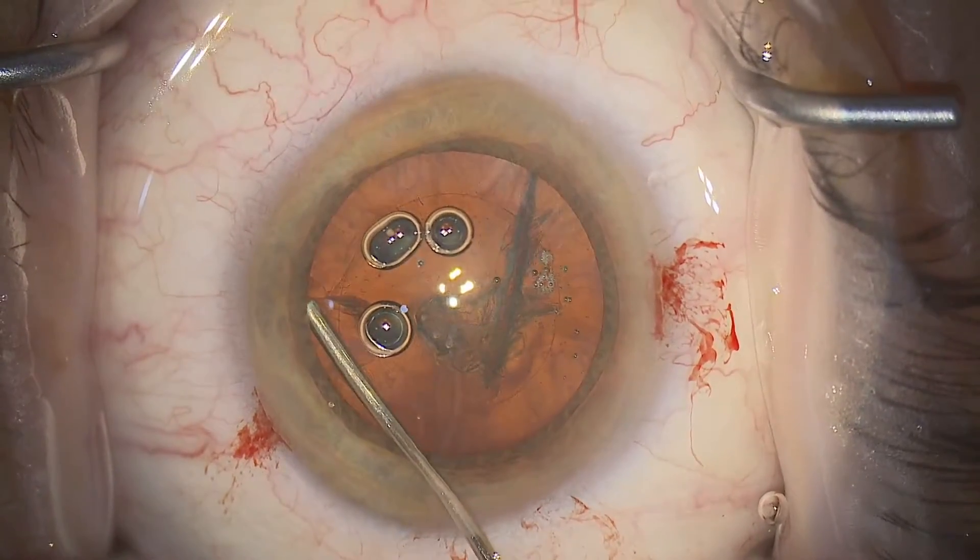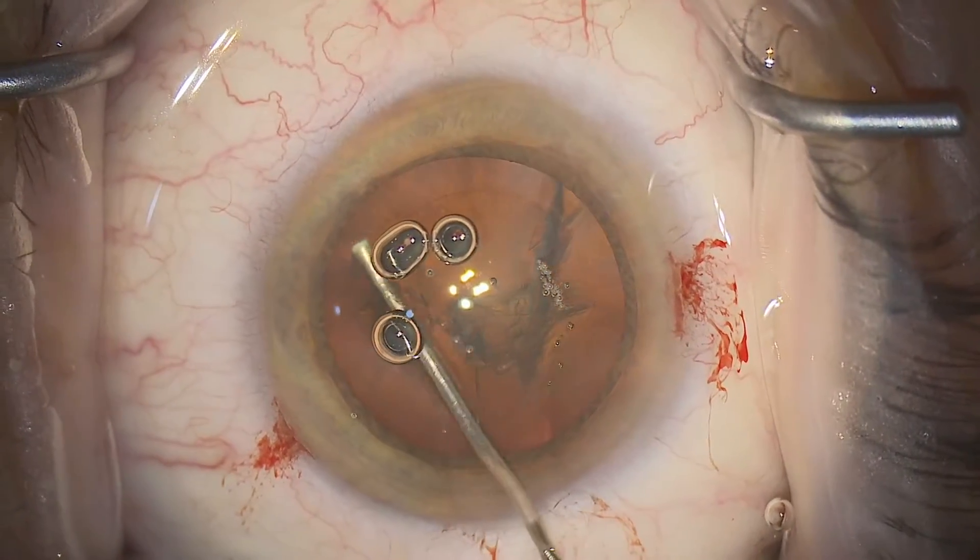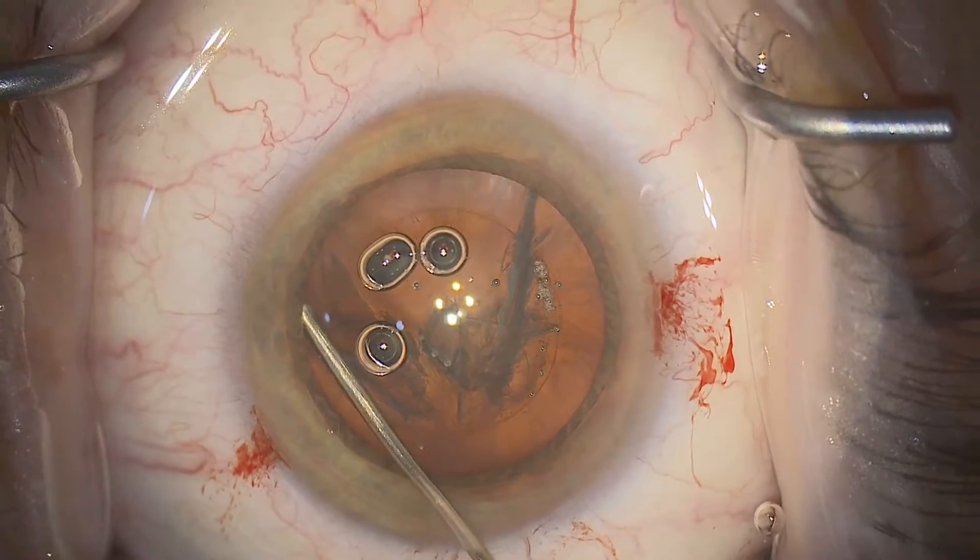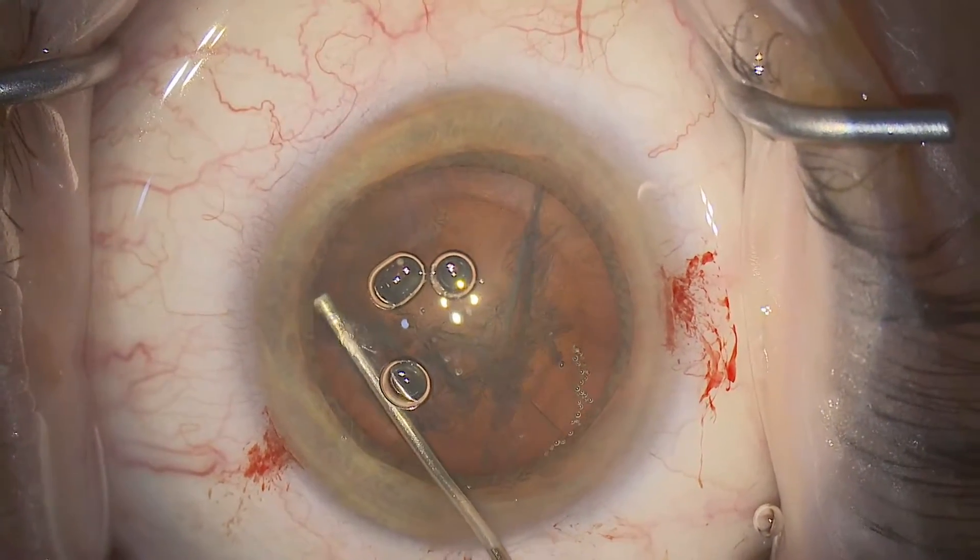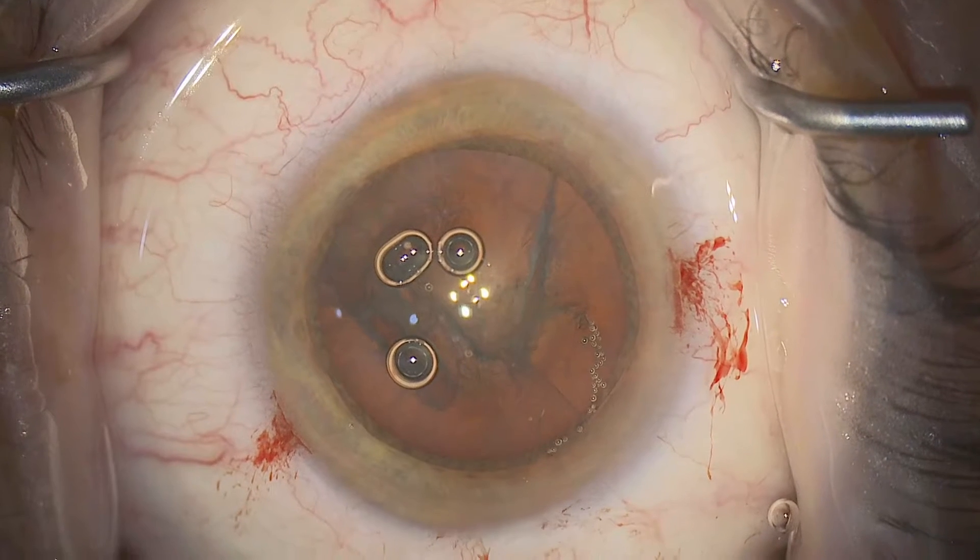The more work you do with the hydrodissection, the less work you have to do rotating the nucleus subsequently. So it's nice to go to the other side and repeat stages three and four, blotting the nucleus to make sure that it's free.